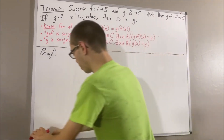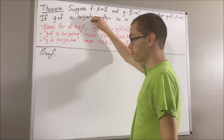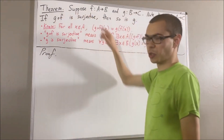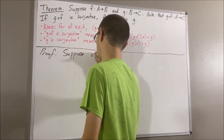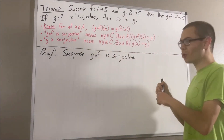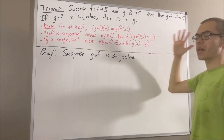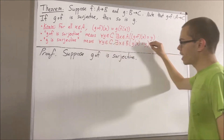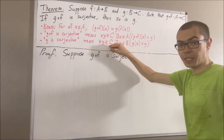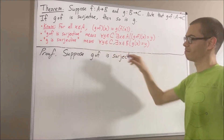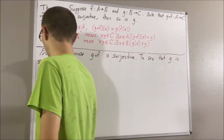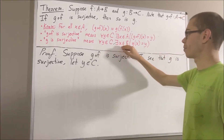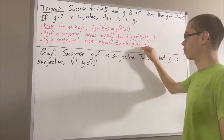So now we're trying to prove: if g compose f is surjective, then g is surjective. To prove that, let's suppose that g compose f is surjective. From here the whole goal is to show that g is surjective, which means we want to prove this statement about every element in C. So give me an arbitrary element of C — I'll call it y. From here we want to show that there exists an element x in B such that g of x is equal to y.